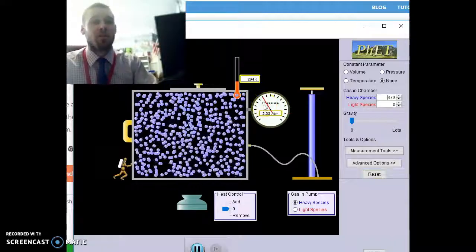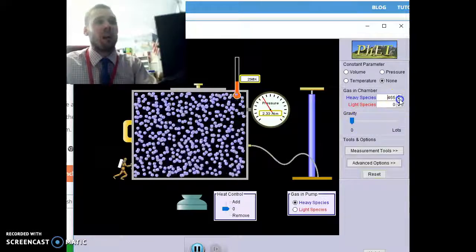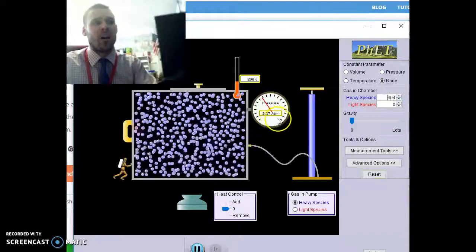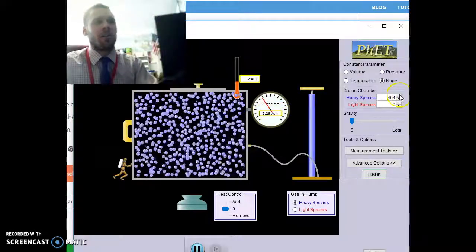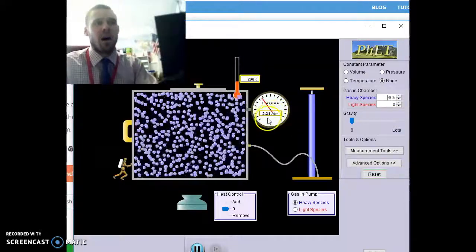Your independent variable for this graph is going to be the amount of particles, and the dependent variable, what we're going to be measuring, is going to be pressure in ATM or atmospheric units. So what I would do after changing the amount of particles, I would wait about 30 seconds to see how pressure is going to respond.